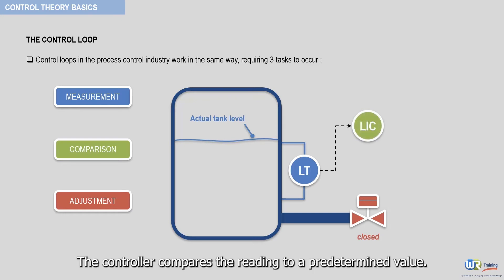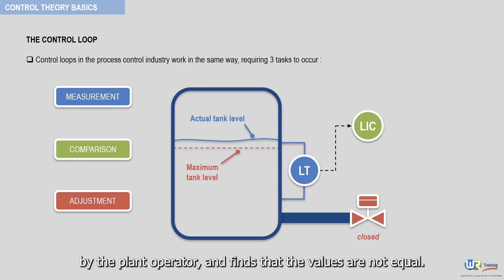The controller compares the reading to a predetermined value. In this case, the maximum tank level established by the plant operator, and finds that the values are not equal.